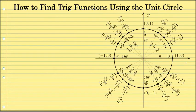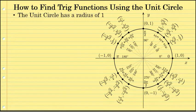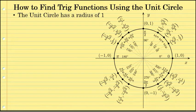The unit circle is a useful tool in trigonometry. The unit circle has a radius of one unit, and the angles around the unit circle are angles that are commonly used in real-world applications of trigonometry. It's fairly easy to find trig functions using the unit circle, and there are a couple of advantages of doing so.